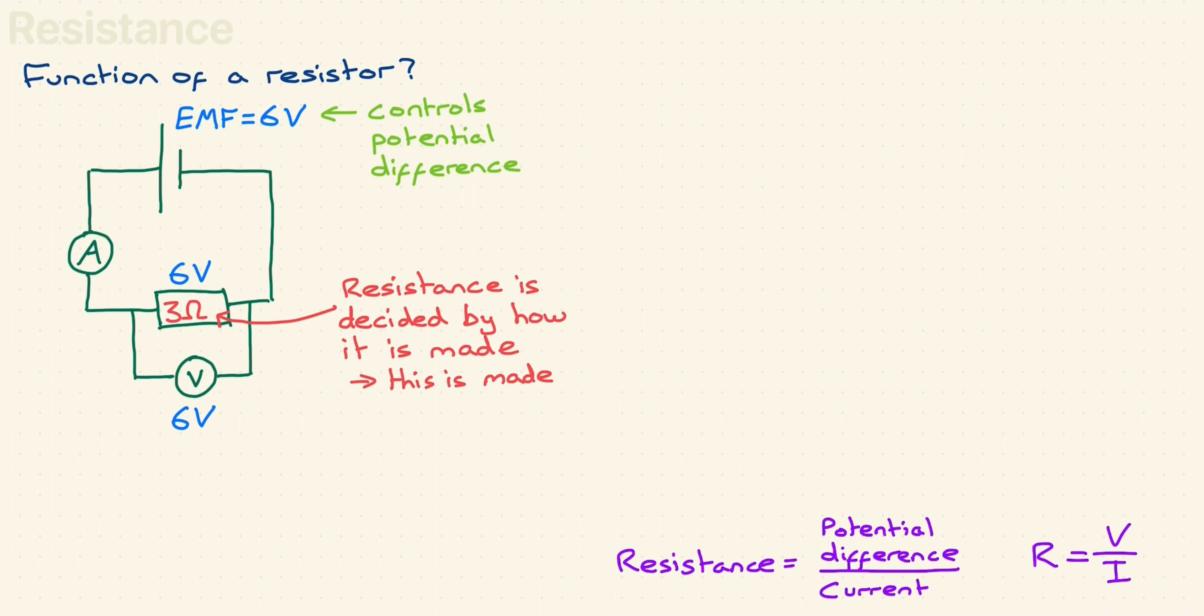The function of a resistor in a circuit is to limit the current. The resistor reduces the current. We know the EMF, so we know the PD across the resistor is 6 volts, and we know the resistance is 3 ohms. We know that R equals V over I, which rearranges to I equals V over R. So I is 6 over 3, 2 amps. The resistor has controlled the current, making it 2 amps.